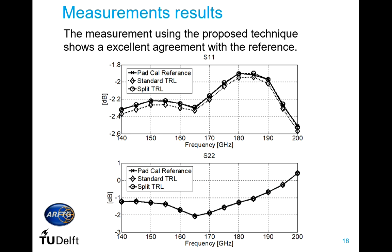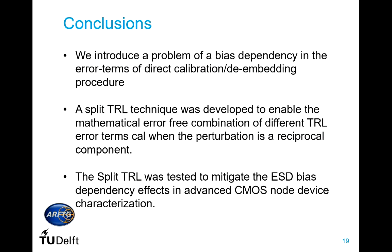This measurement should exactly match what we get directly at the pads using the TRL calibration at the pads, and in fact that is what we see in the results. Here we see S11 and S22 of our open measured at the pads. Using the split TRL we get excellent agreement with the reference measurement. We clearly see an error when using a standard TRL made with zero volts at both ports. Note that S22 does not change between methods because we always applied zero voltage at port two.